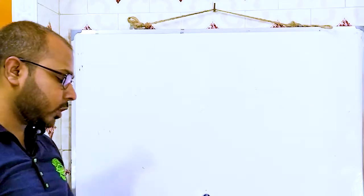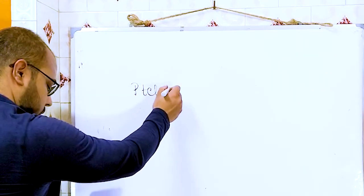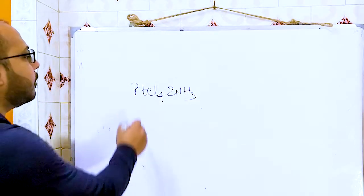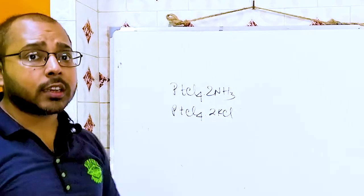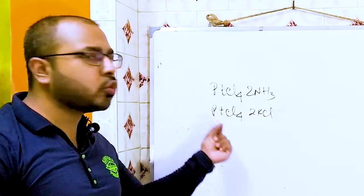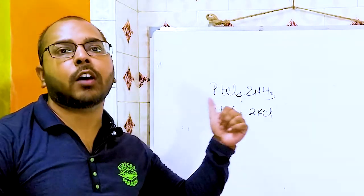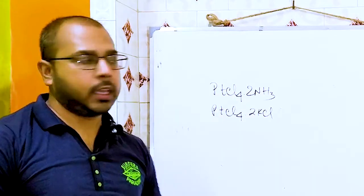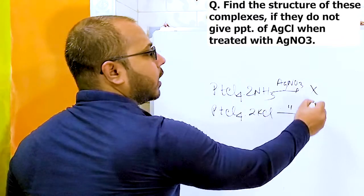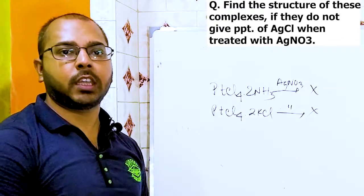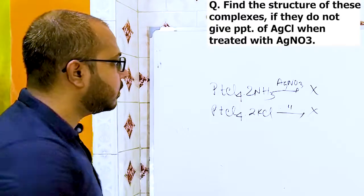We have another question. Two complexes are there: PtCl4·2NH3 and PtCl4·2KCN. Neither of these two compounds gives a precipitate when allowed to react with AgNO3. Predict their structure. Applying our concept — if no AgCl is precipitated, all the chlorine must be present within the coordination sphere.